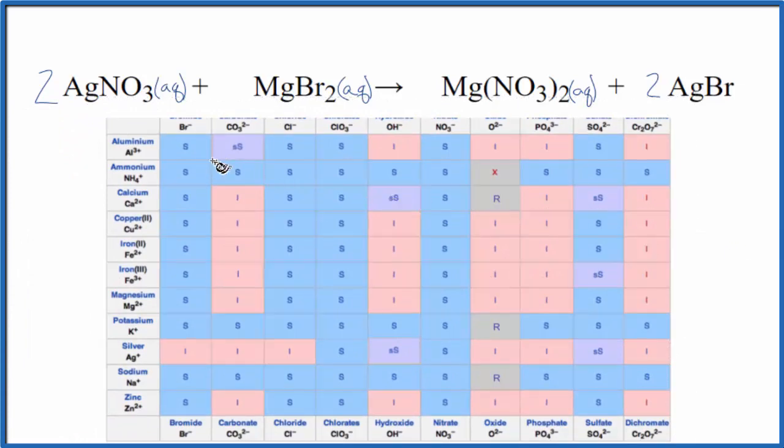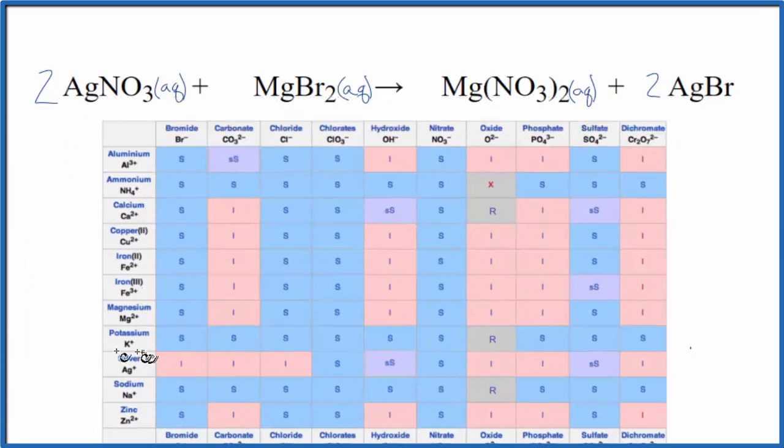Silver compounds are a little bit strange. So we have silver and bromide. We come over and we see that most of the bromides are soluble with that S. But silver bromide, we have an I. That means that's insoluble.